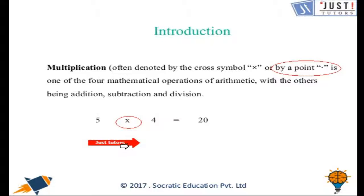So if we need to multiply two numbers we need to put a cross symbol or a point between these two numbers like here.